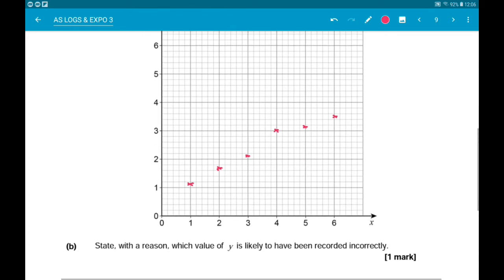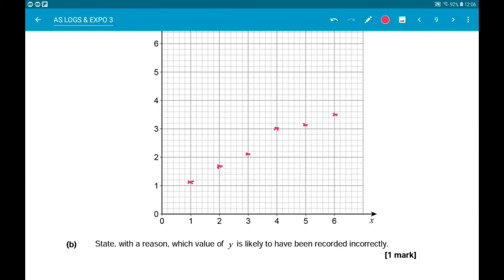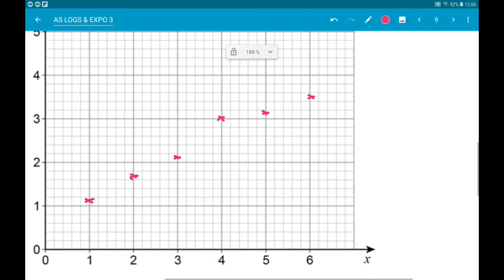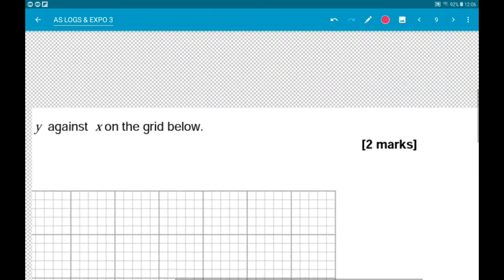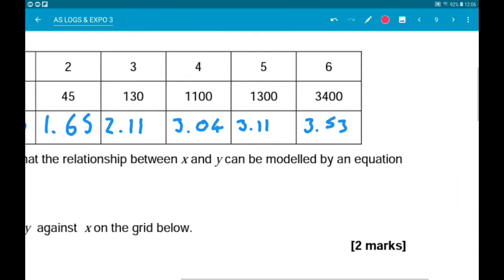Now part B wants us to state with a reason which value of y is likely to have been recorded incorrectly. So there was one point there really ruining our straight line. And we're looking at this guy here, which is when x is equal to 4.